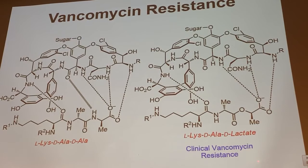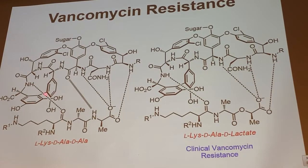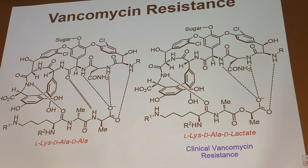Bacteria are able to evolve to beat antibiotics. All the bacteria have to do is switch an NH for an oxygen and exchange this amide bond for an ester bond. Now vancomycin binds about a thousand times weaker to this species because you've lost one hydrogen bond and replaced it with an electrostatic repulsive interaction between two oxygens.